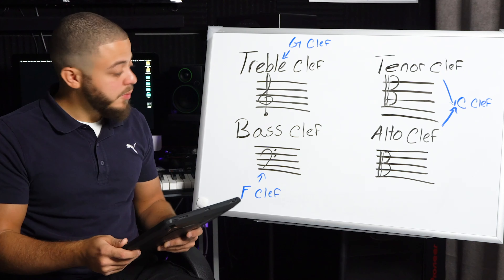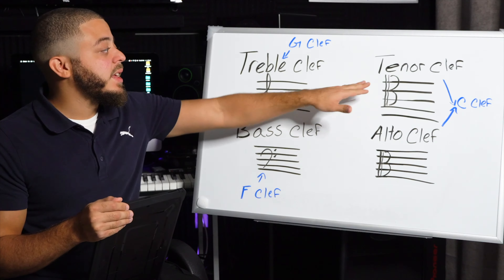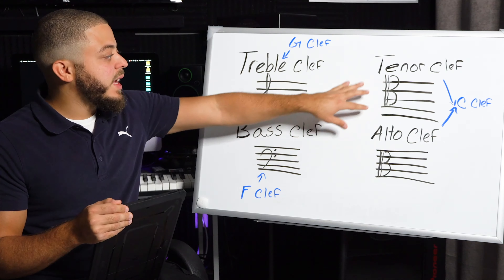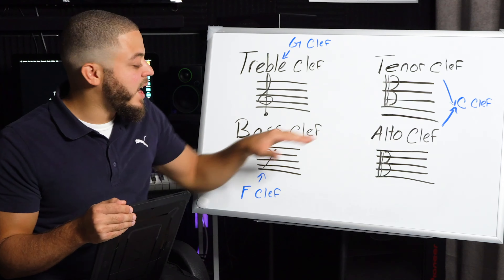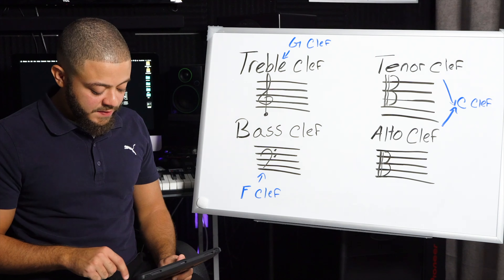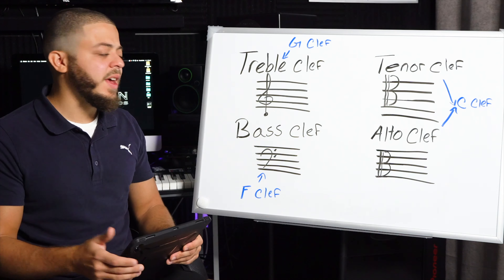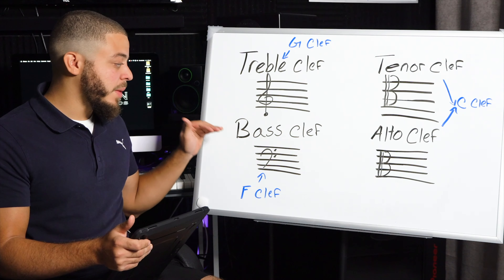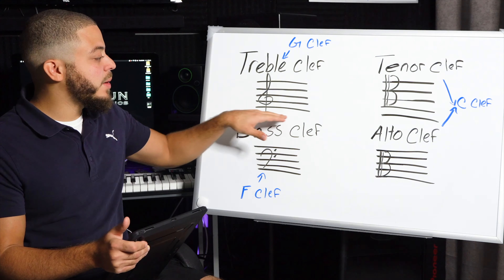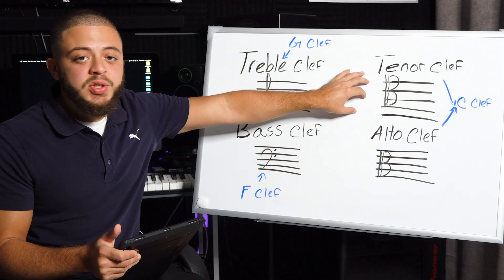Moving to the tenor clef, we have the cello as well, bassoon, and trombone. The reason why bass clef players use the tenor clef is because when they're playing above the staff or in a higher register, they switch to the tenor clef so they can read the notes on the staff instead of above it. The last clef is the alto clef, and instruments that use it include viola, English horn, trombone, and bassoon. Some of these instruments also use the bass clef, and if notes on the treble clef become too low, they move into the alto clef. If reading notes in the bass clef is too high, they switch to the tenor clef.